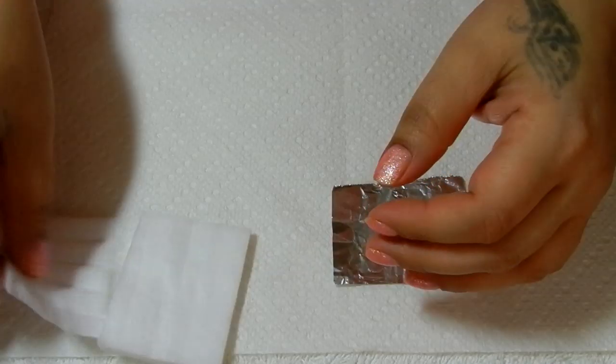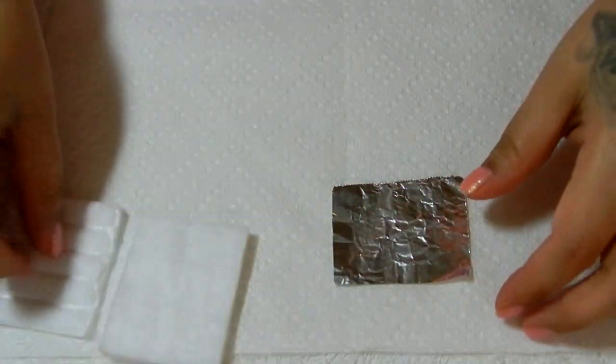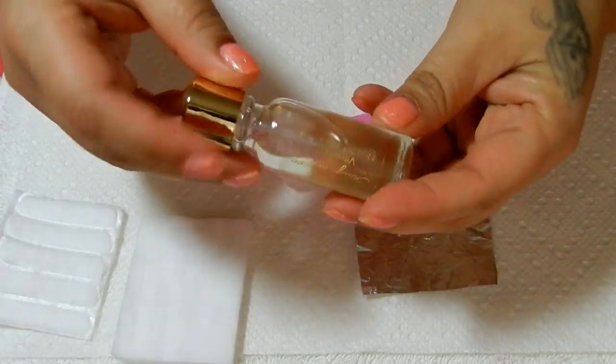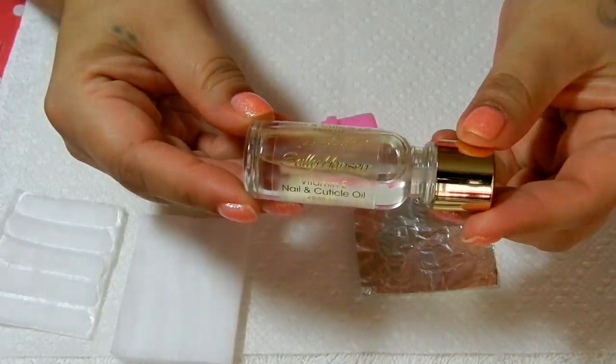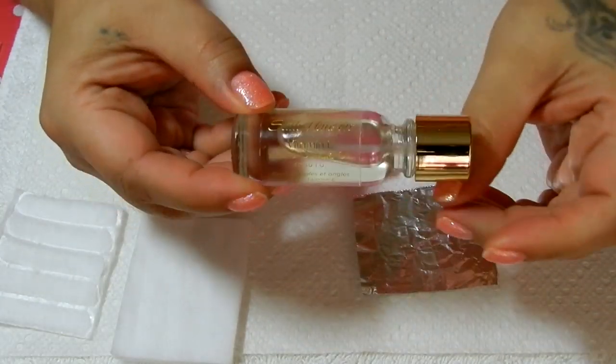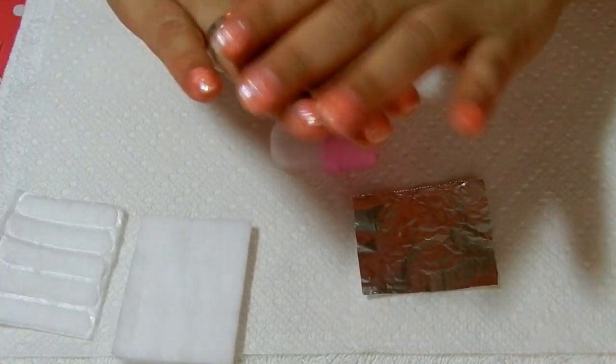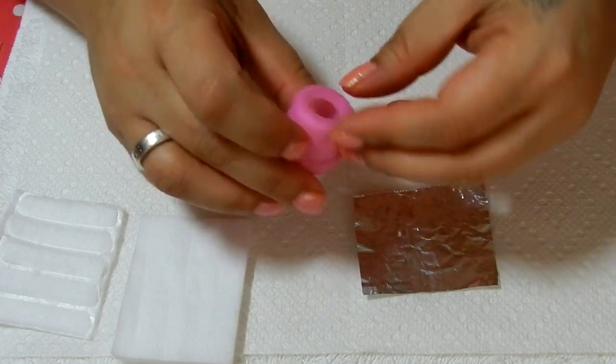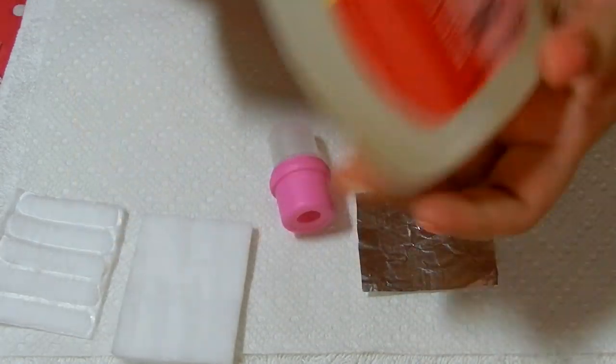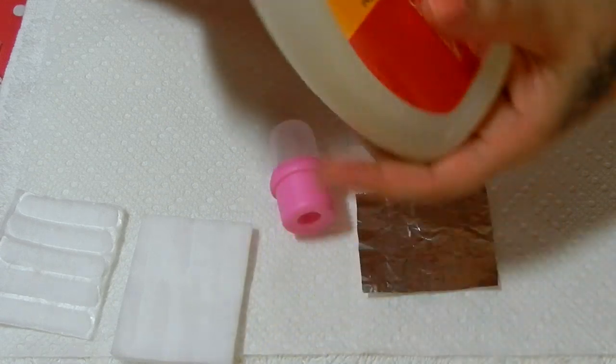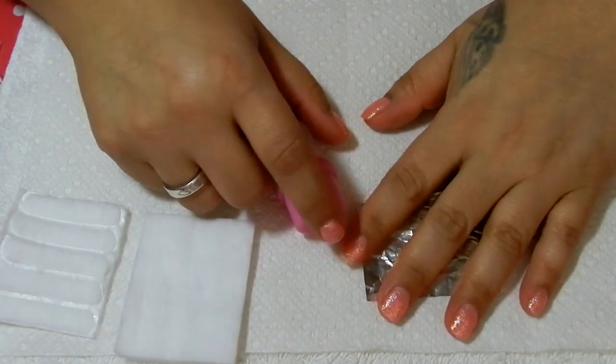Before I did that, I just put some cuticle oil on my nails because I'm going to be using nail polish remover and I don't want it to be more damaging. I'm using regular household nail polish remover that you can get at the dollar store or supermarket.